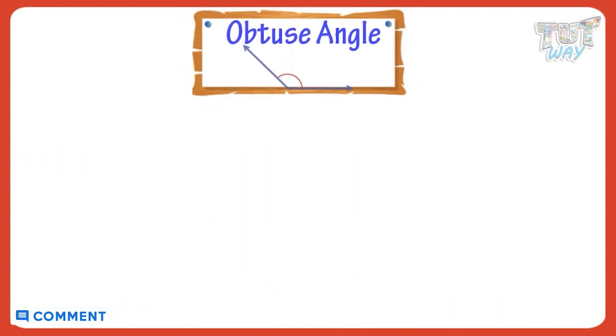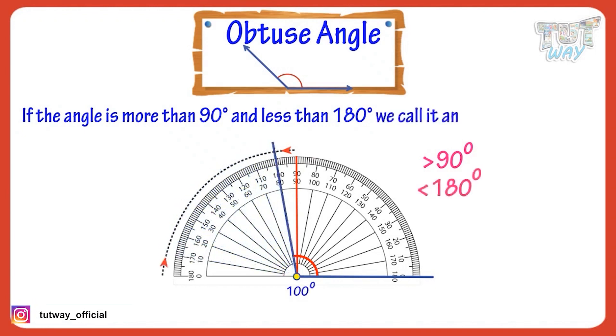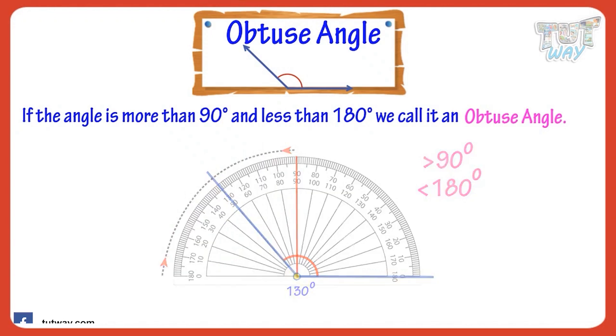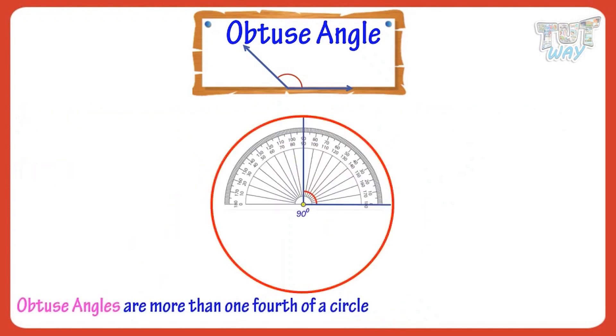Now let's see what are obtuse angles. If the angle is more than 90 degrees but less than 180 degrees, we call it an obtuse angle. Example of obtuse angles. So obtuse angles are more than one-fourth of a circle and less than half of a circle.